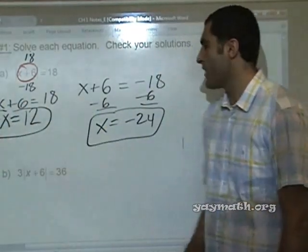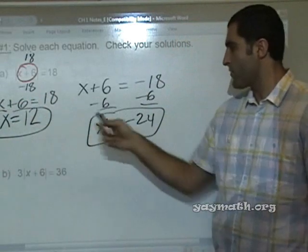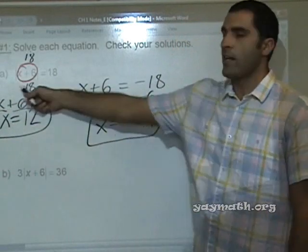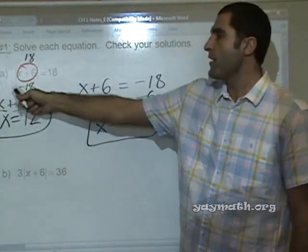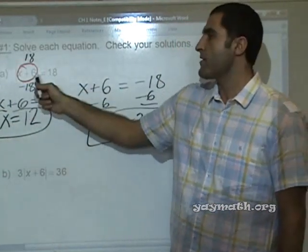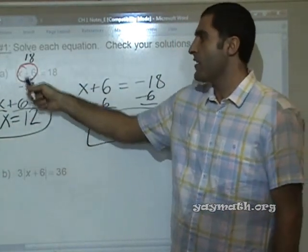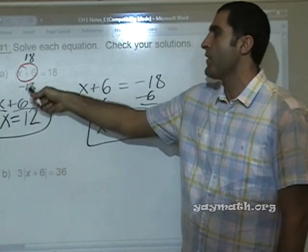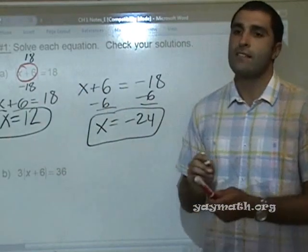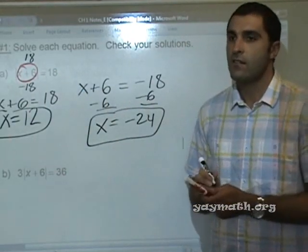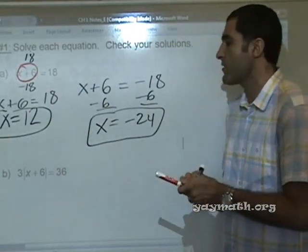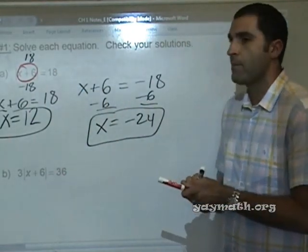We have two solutions. We can check them both. We already checked the 12. If we check negative 24: negative 24 plus 6 is negative 18. Absolute value of negative 18 is 18. Any questions on that one?